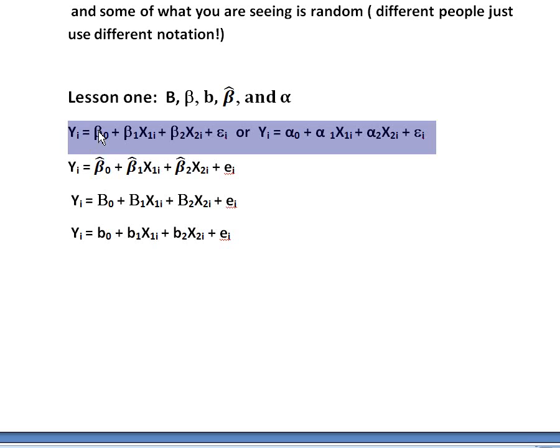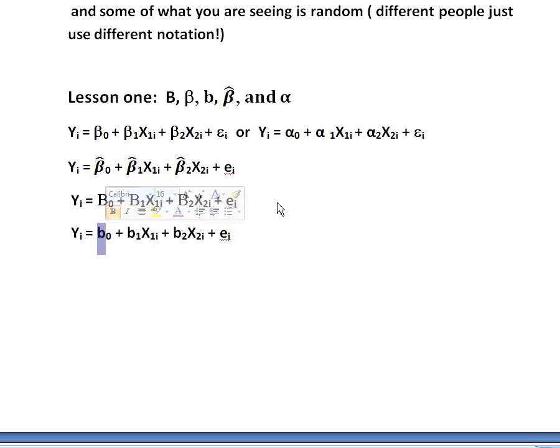So beta hats for estimates and betas for the true population value. However, a lot of people will instead use capital B's for the population values and they will use lowercase b's for estimates. And now if I'm going to do this for the population values, the capital B's, then I shouldn't have this e here, I should have the epsilon here.